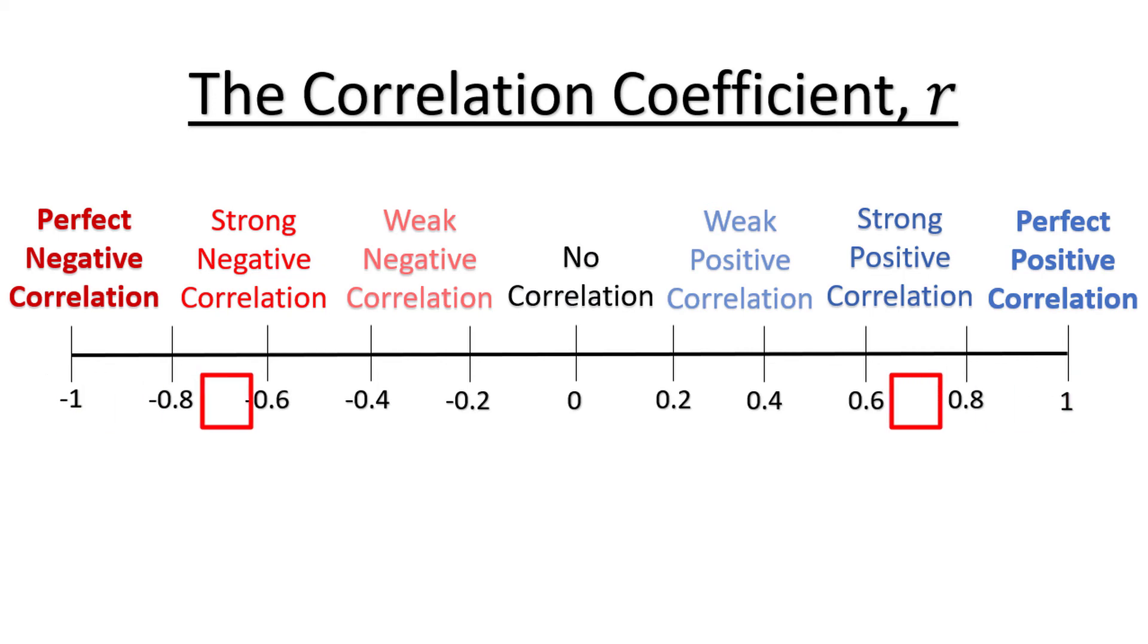As we move closer to 0, the relationship gets weaker and weaker, until we get to 0, where there is no correlation at all, and drawing a line through the points doesn't really make any sense.